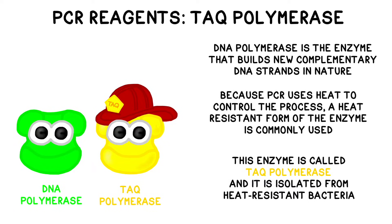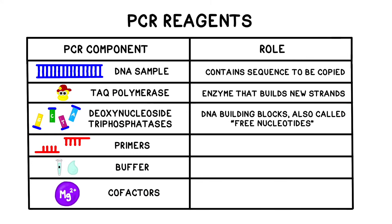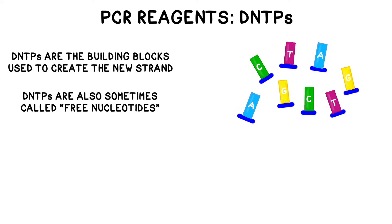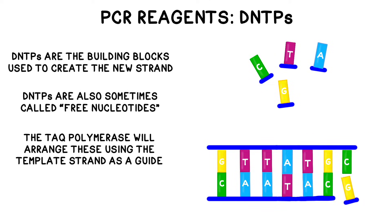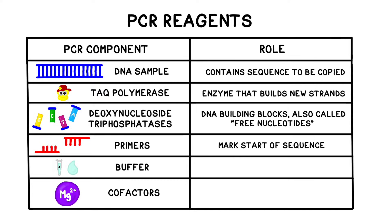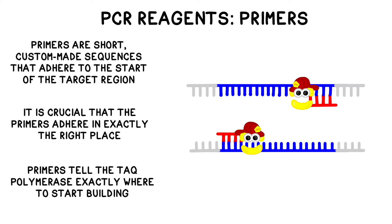Taq polymerase has been isolated from the heat-resistant bacteria Thermus aquaticus and can withstand the hot temperatures needed for PCR. Deoxynucleoside triphosphates, or dNTPs, are the building blocks used to construct the new DNA copies — sometimes these are also called free nucleotides. The Taq polymerase will arrange the dNTPs using the template strand as a guide. Primers are single-stranded chunks of DNA that are complementary to the start of a target region; they tell the polymerase exactly where to start copying. Because it's so important for the primers to mark the correct and only the correct part of the template strand, a tremendous amount of effort goes into designing them.